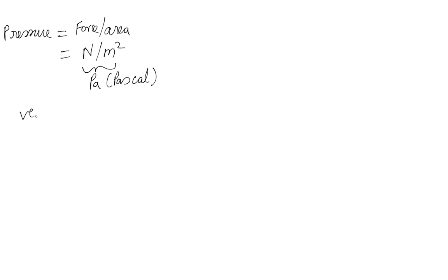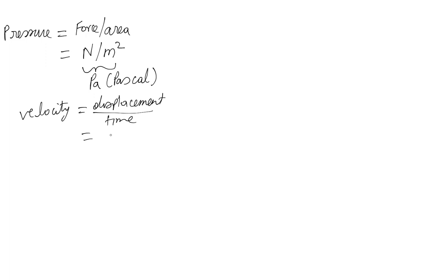Let's see how velocity is expressed in CGS units. Velocity is displacement divided by time. The CGS unit for displacement is centimeters, and time is still seconds. So velocity in CGS units is centimeters per second.